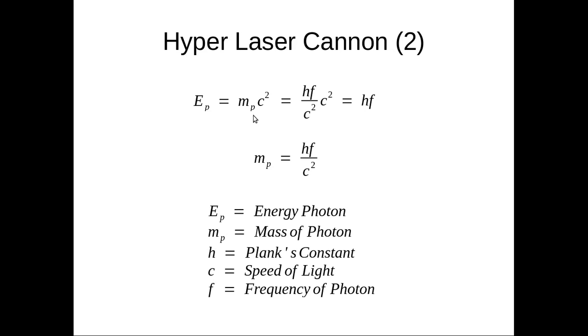So we get E equals mc squared in the case of a photon. The mass of the photon is hf over c squared, where h is Planck's constant, f is the frequency, c squared is the velocity of light squared. That's what mp is. So basically photons have mass.